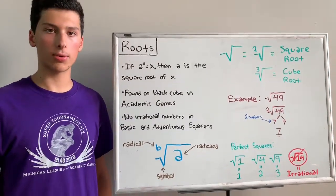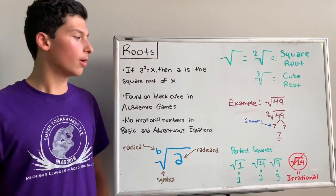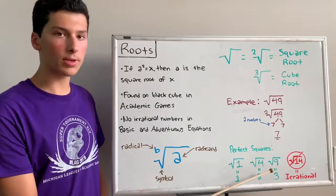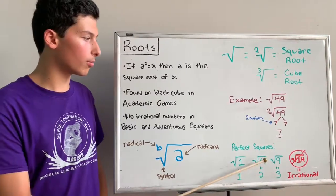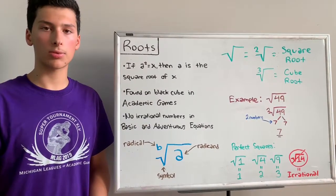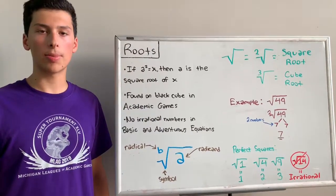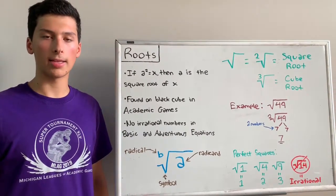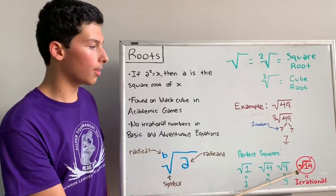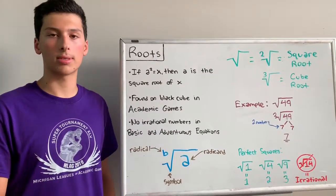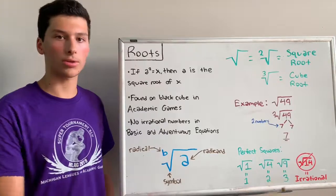We also have things called perfect squares. Perfect squares are numbers that when put under a square root come out to equal a rational whole number. For example, 9 is a perfect square because when we put it under the square root, it comes out to be 3, since 3 times 3 equals 9. To find a perfect square, take any number — say 4 — and raise it to a power of 2. 4 to the power of 2 is 16, and the square root of 16 is 4, so 16 is a perfect square. 14, on the other hand, is not a perfect square because there are no rational whole numbers that multiply together twice to get that number, so it's known as an irrational number.